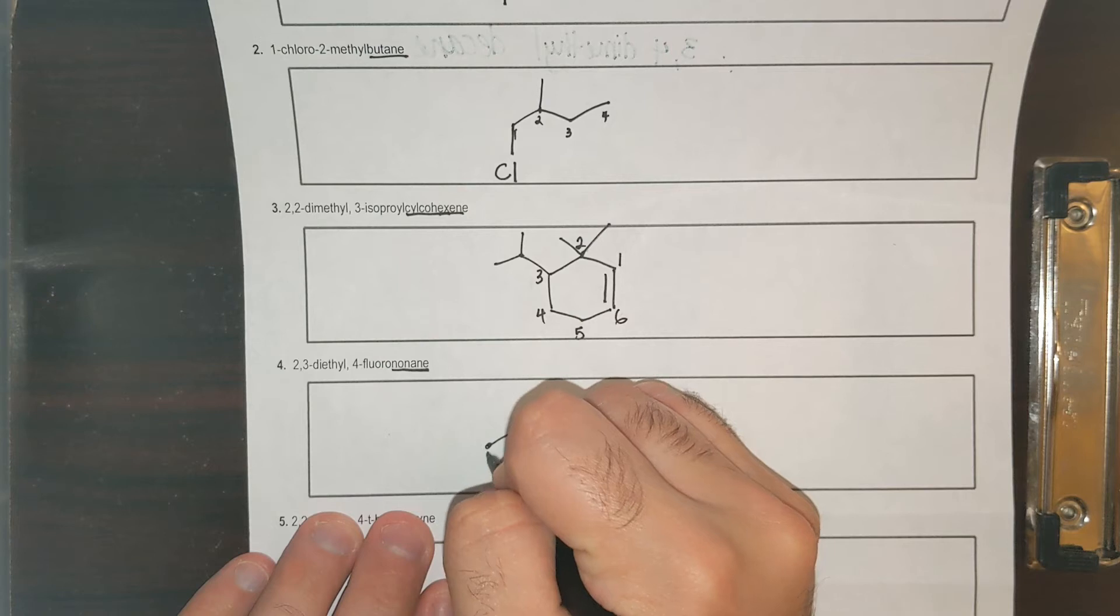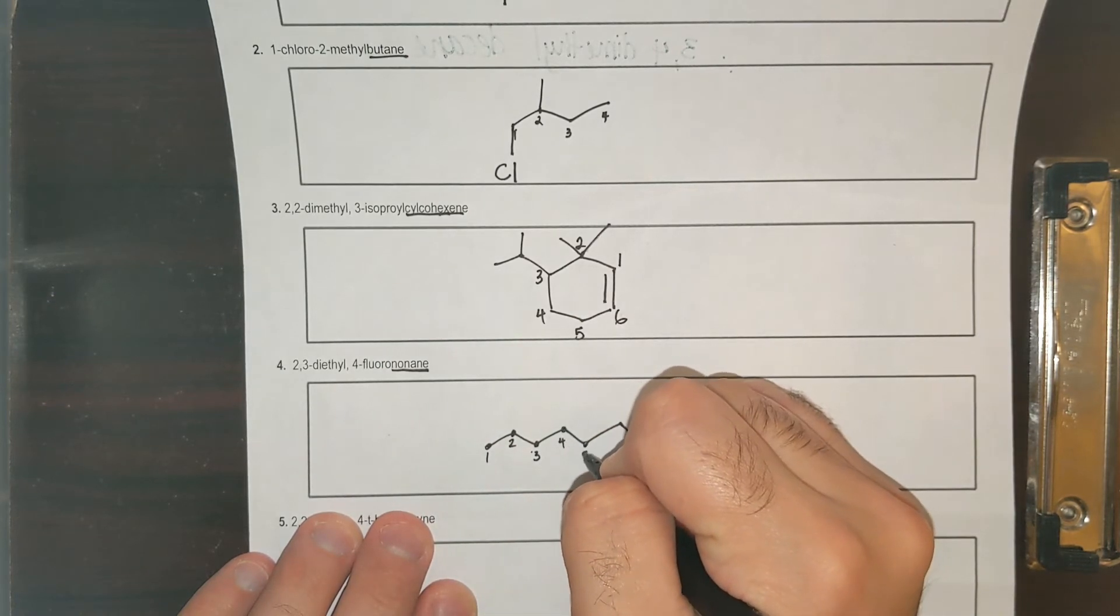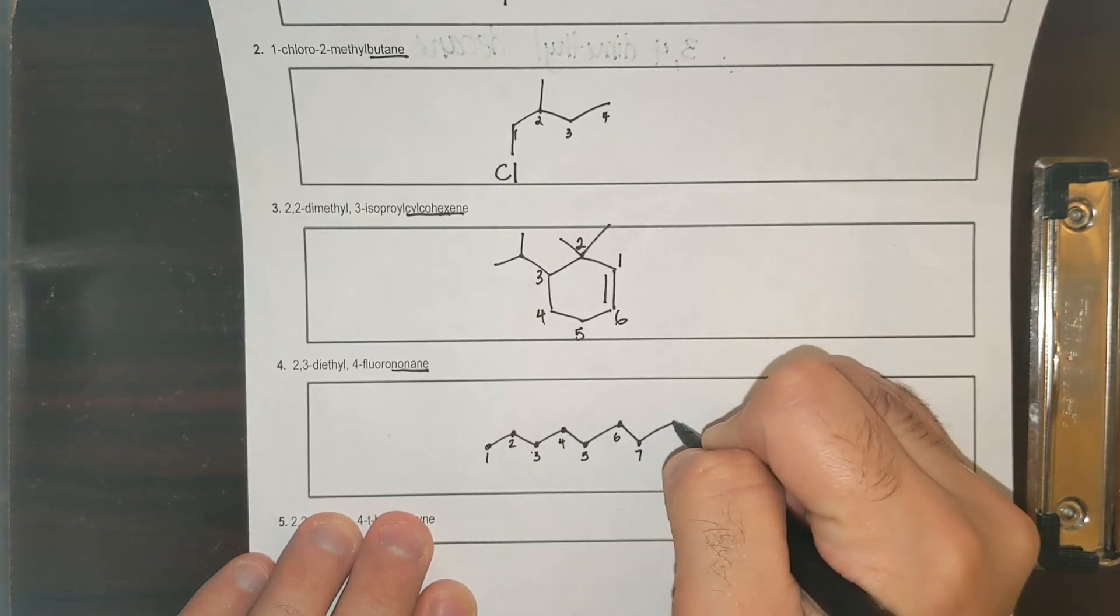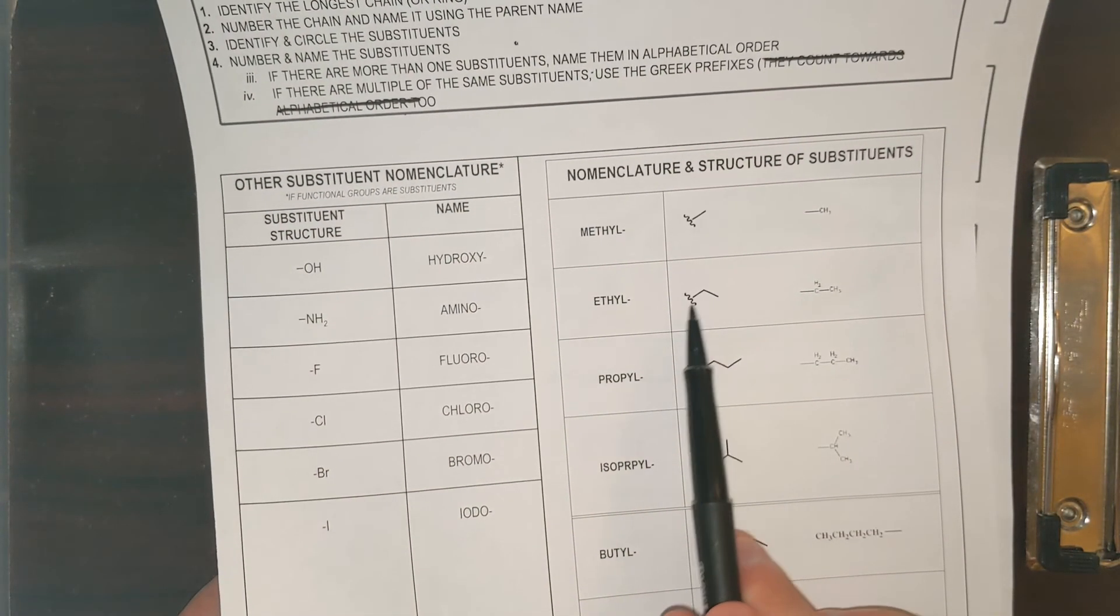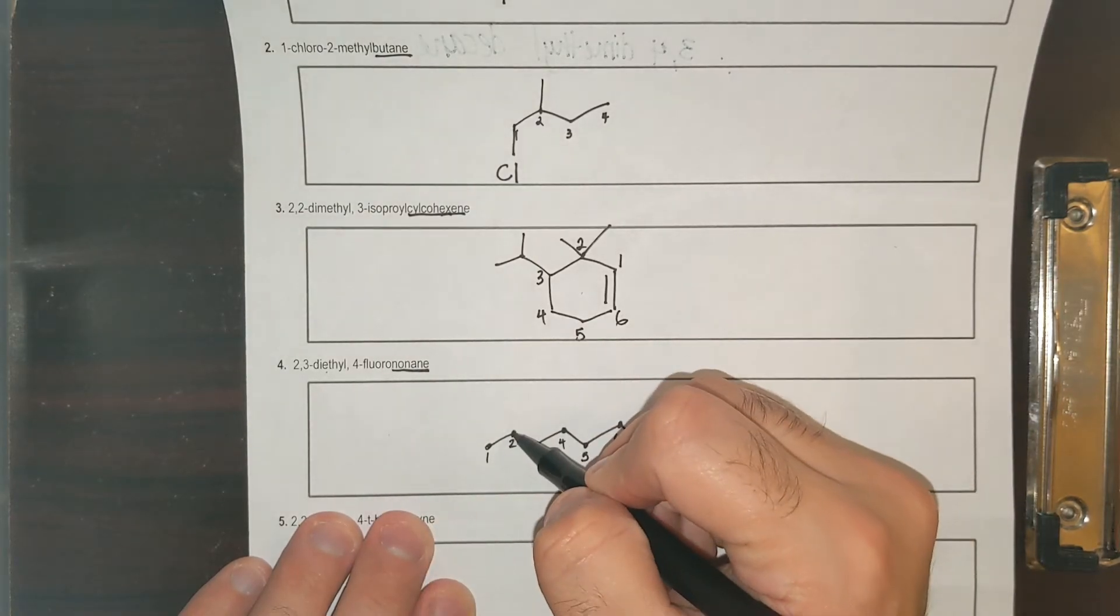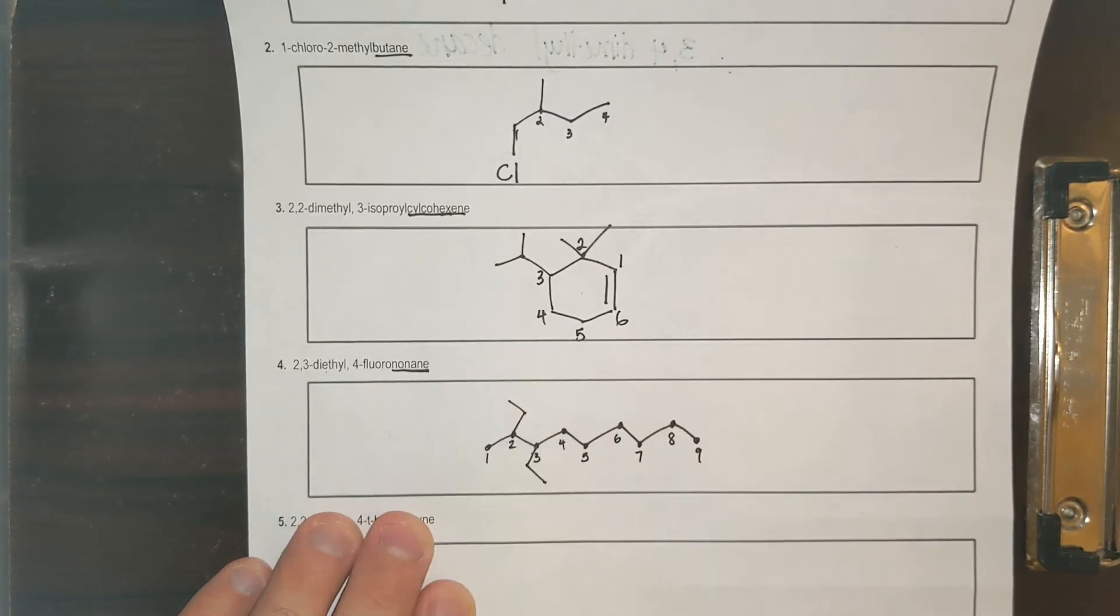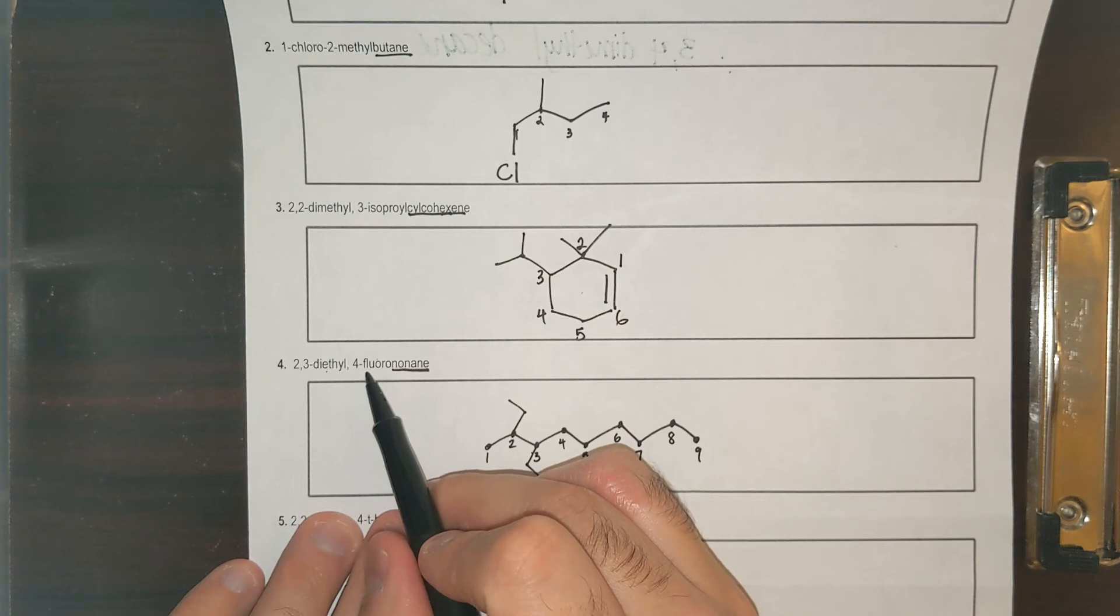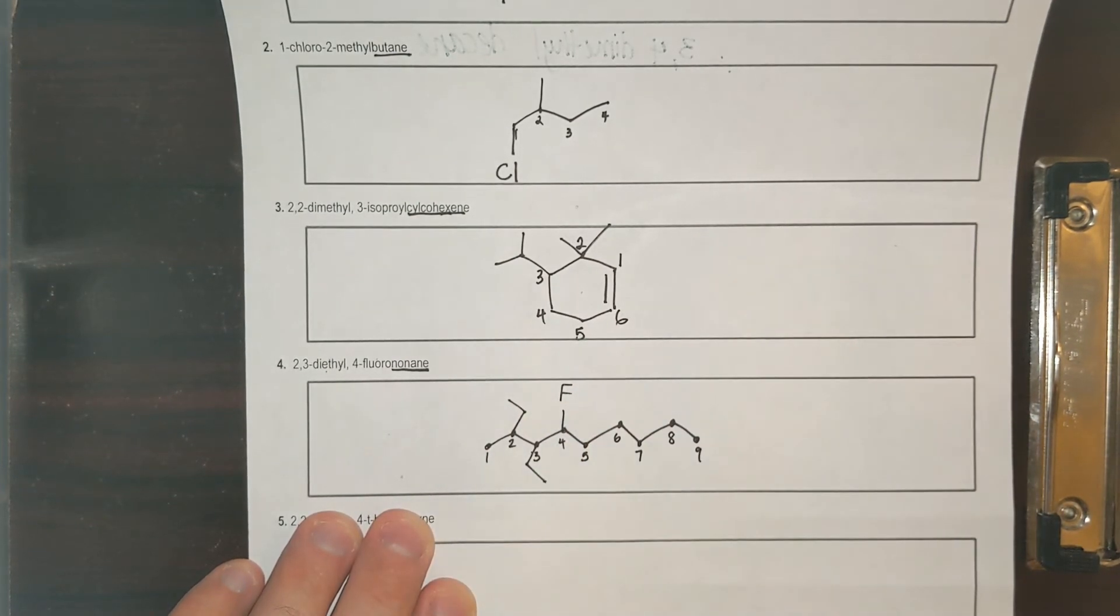Now I have nine carbons here and I'm going to number them one through nine. And now 2,3-diethyl. If you forgot what ethyl looks like on page 21, I have ethyl. Ethyl looks like kind of like an upside down V. So 2,3-diethyl, two has an ethyl, three has an ethyl. Diethyl means I have two of them, two and three. And then 4-fluoro. Fluoro means fluorine. F, done.